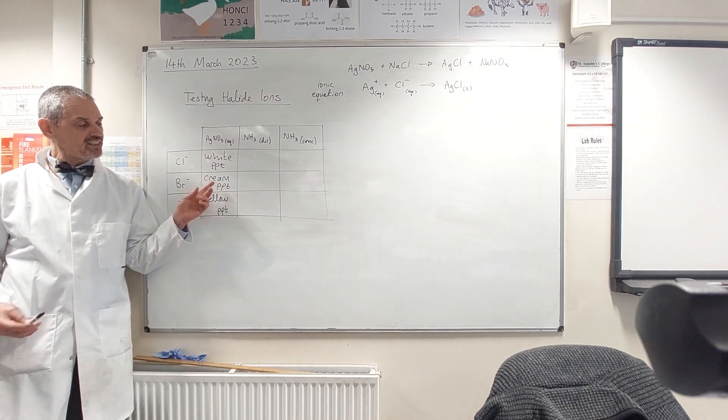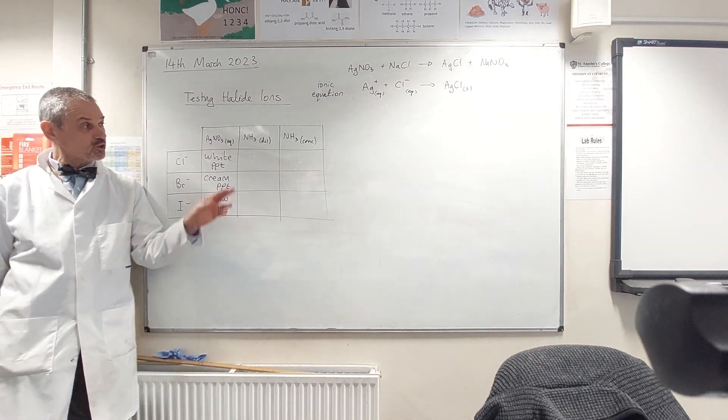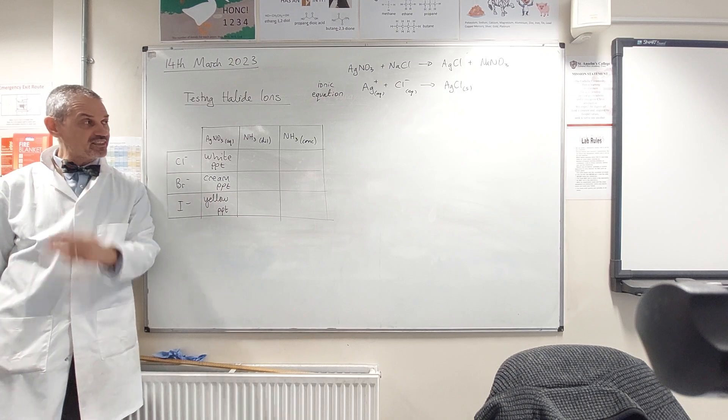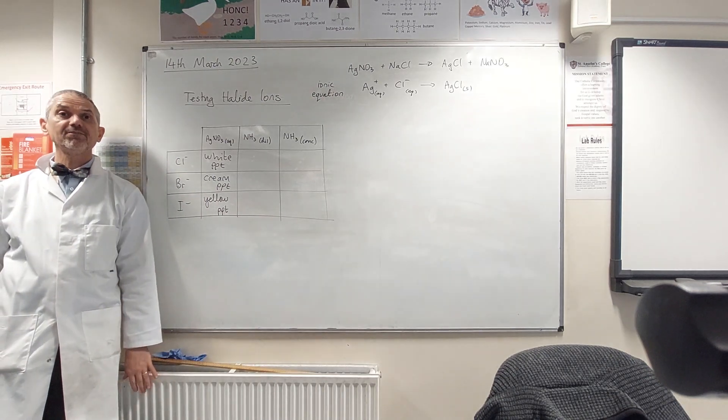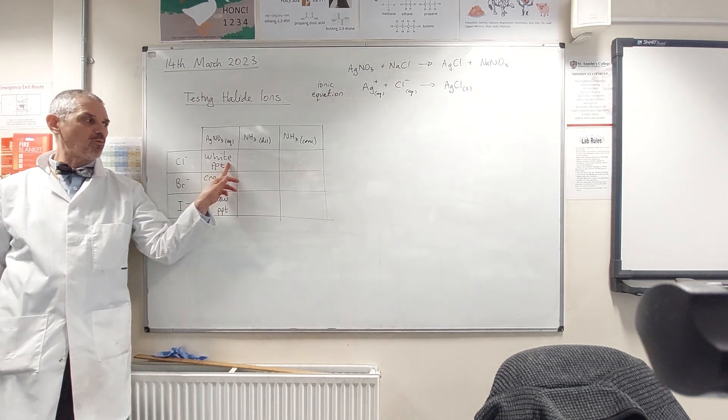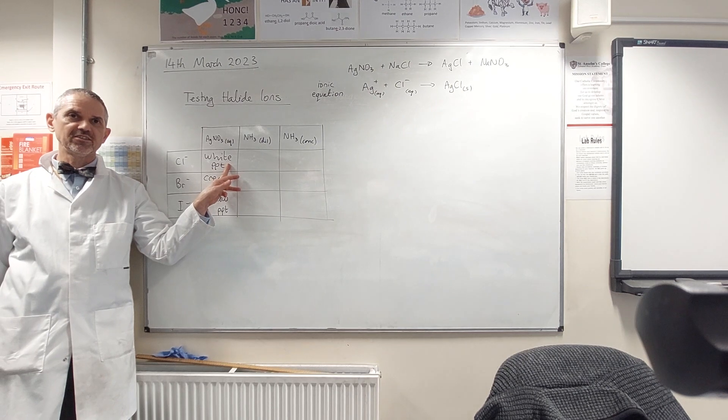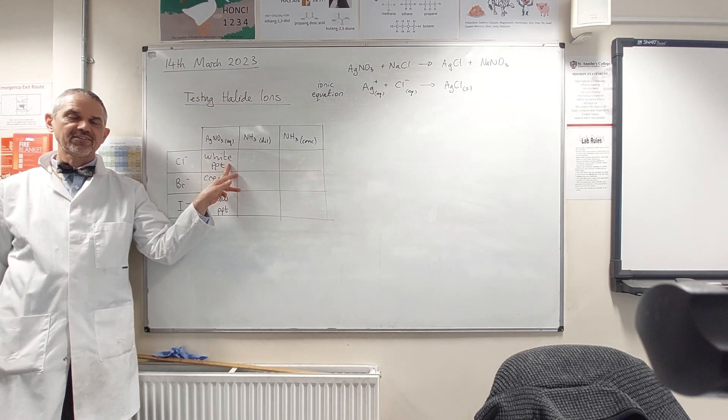Okay, so let's assume we've got our whitish-creamish-yellowish precipitate. We're not quite sure what it is. So we chuck in some dilute ammonia. What do we get? White precipitate for chloride. So we don't say it goes clear, we say...